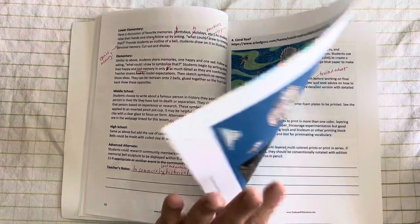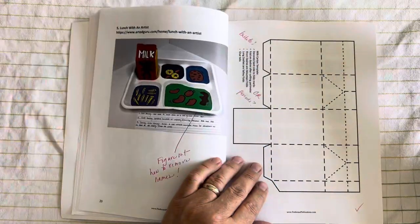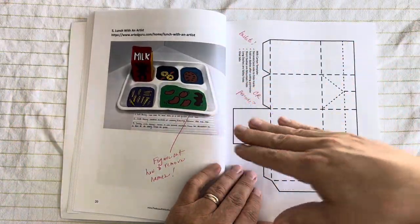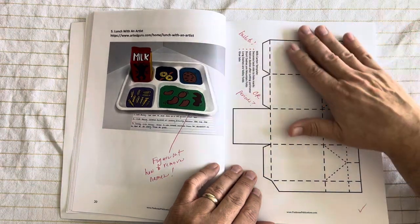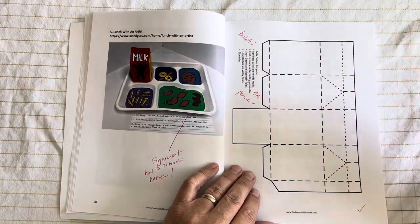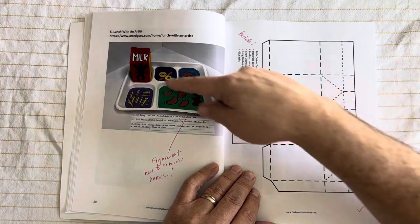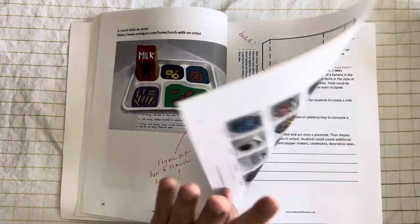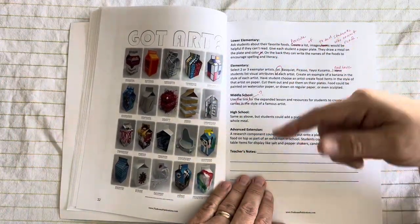So I do a coral reef lesson that's in here, doing lunches in the form of different artists throughout history. And you can actually copy this page and make it available to students so that they can make a milk carton in the style of a different artist. And I even have some posters.